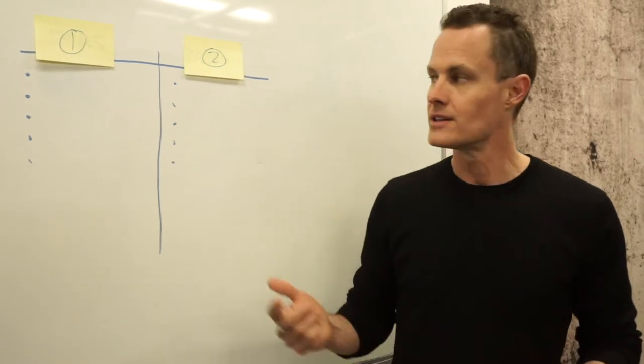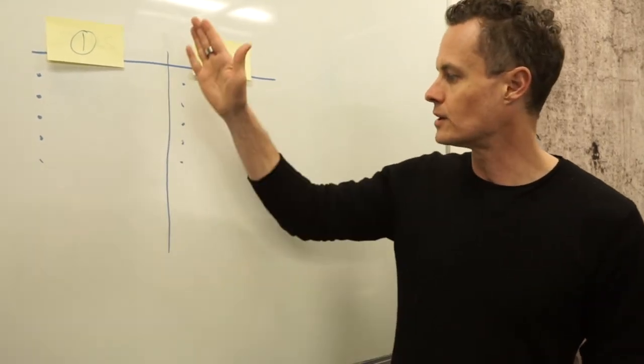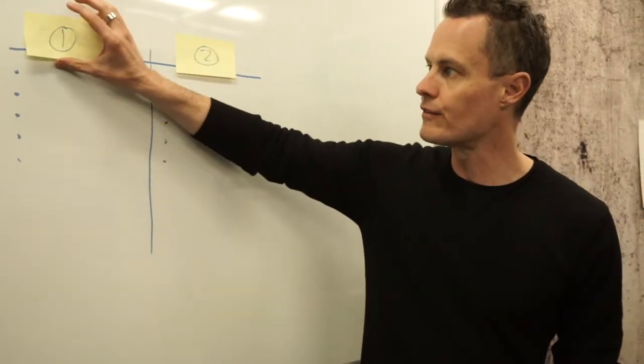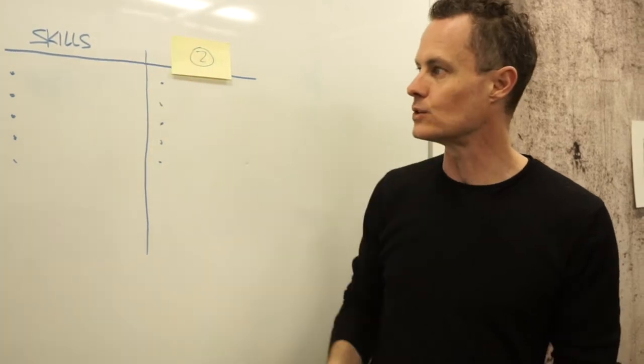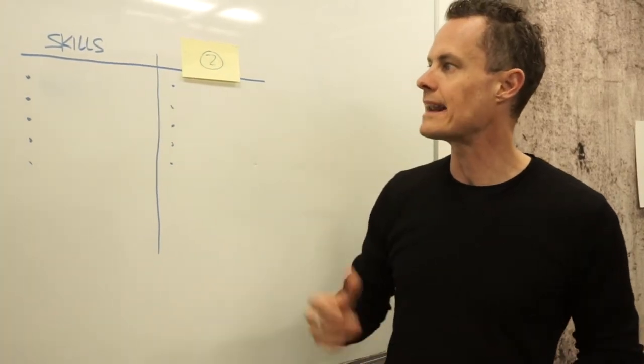Very simply, you take a piece of paper, you divide it into two columns, and the very first column here are your skills. What you want to do here is write down everything that you're good at, regardless of whether or not you enjoy it.